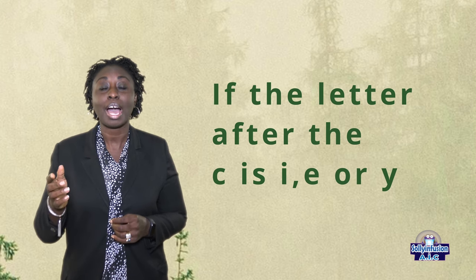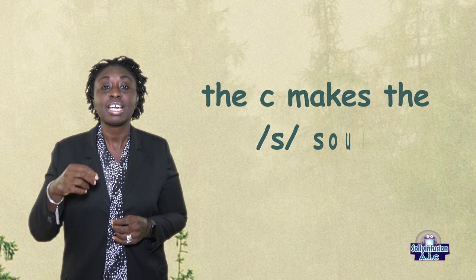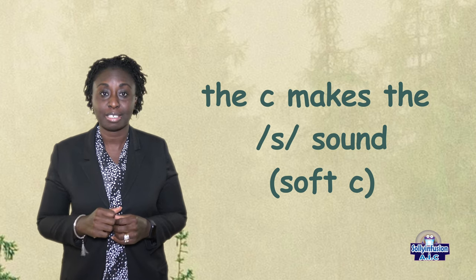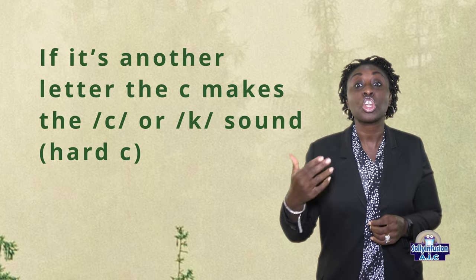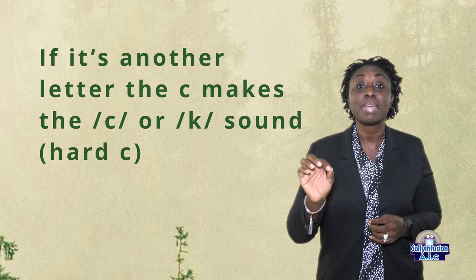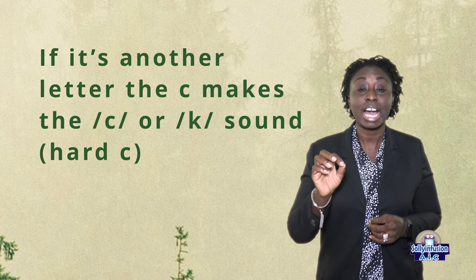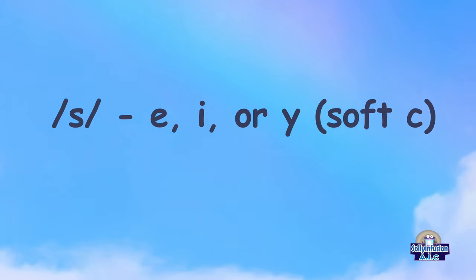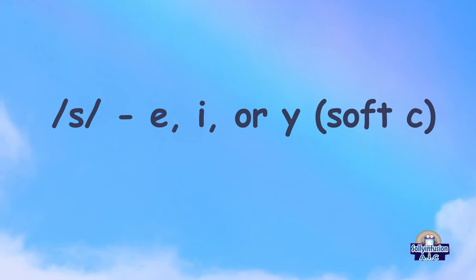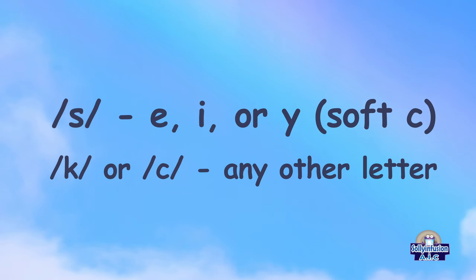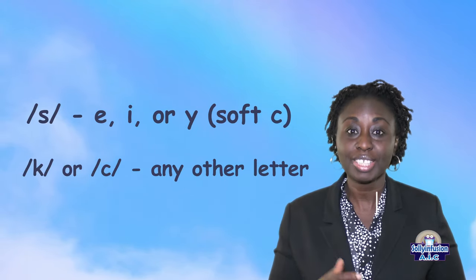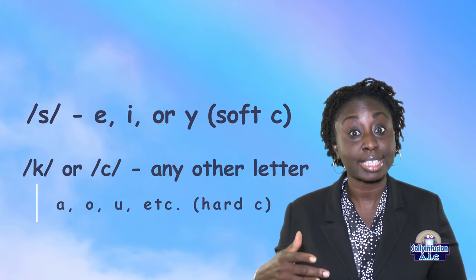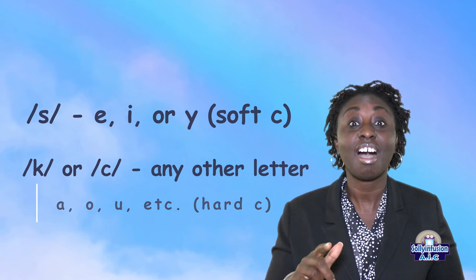or Y, the C makes the soft C sound. If it's another letter, the C makes the hard C sound. So when the C is followed by E, I, or Y, it takes the soft C sound. When the C is followed by any other letter — for example A, O, U, etc. — it takes the hard C sound.